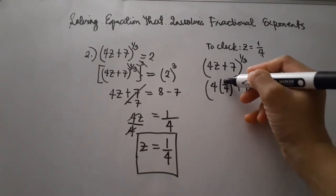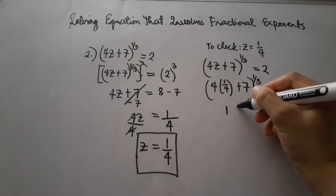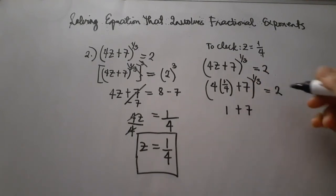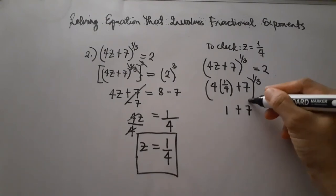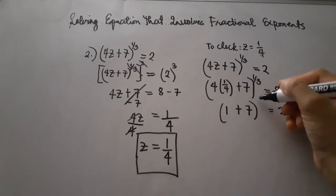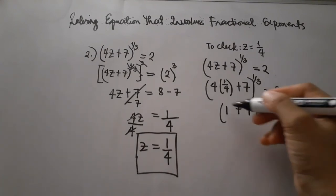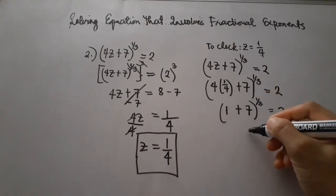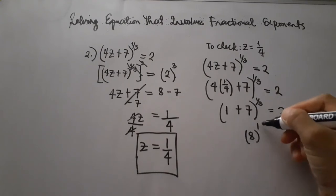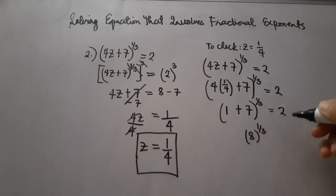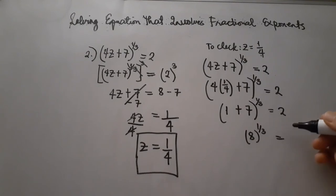4 times 1 fourth equals 4 divided by 4 equals 1. So 1 plus 7, raised to the power of 1 third, is equal to 2. Then 1 plus 7 is equal to 8, raised to the power of 1 third, is equal to 2.